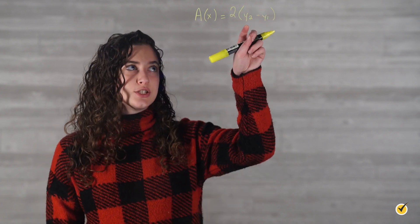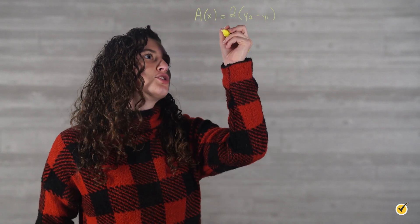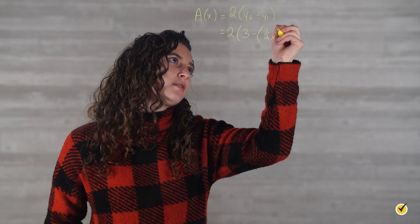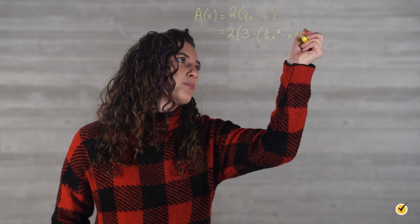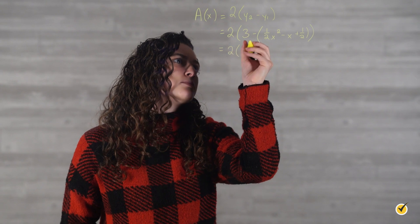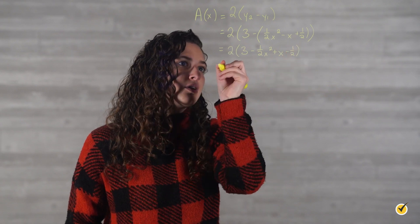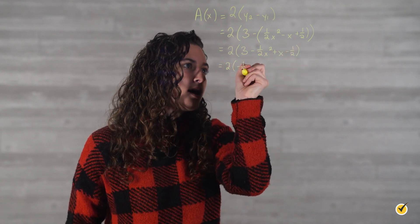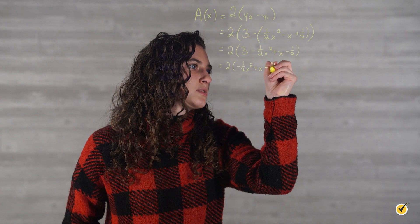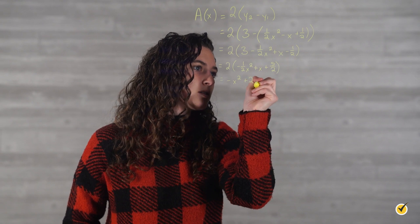So our area in terms of x is going to be equal to 2 times (y₂ minus y₁). Since y₂ equals 3 and y₁ equals one-half x² minus x plus one-half, we can plug these functions in. So this will be 2 times (3 minus (one-half x² minus x plus one-half)), which simplifies to 2 times (negative one-half x² plus x plus five-halves), which equals negative x² plus 2x plus 5.